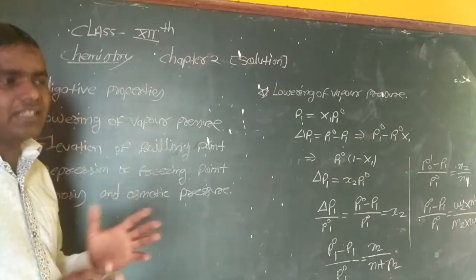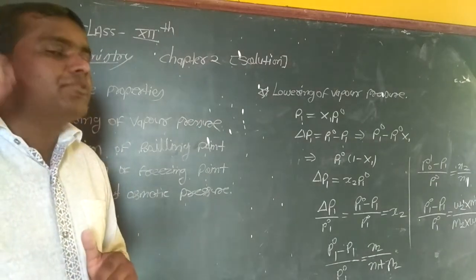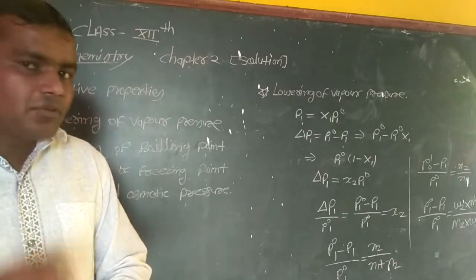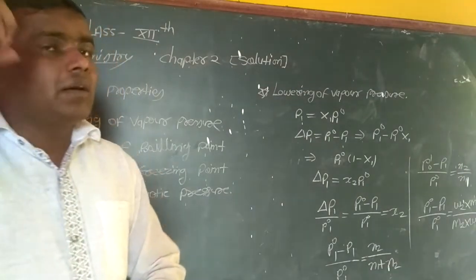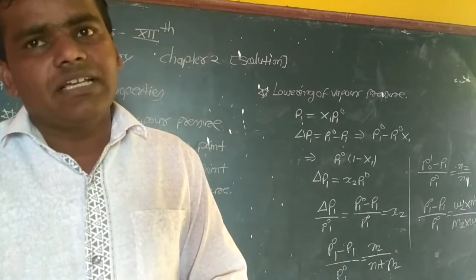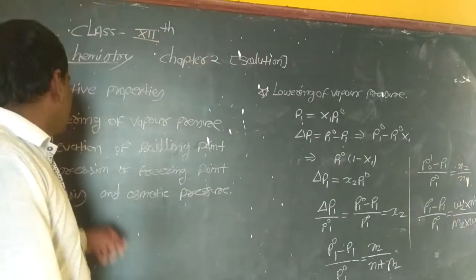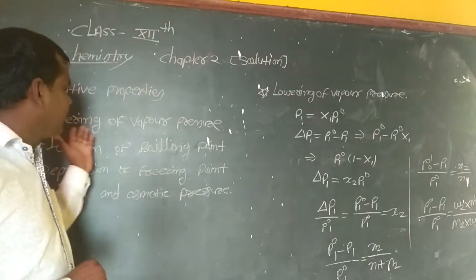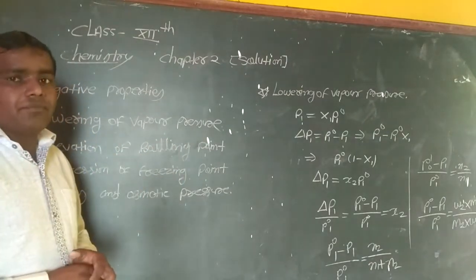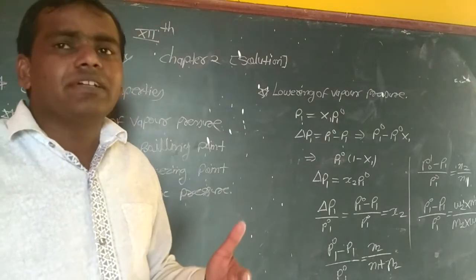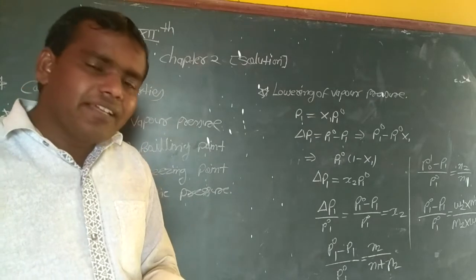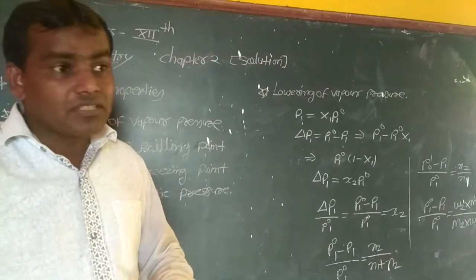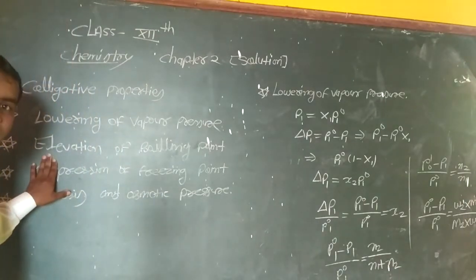When the vapor pressure decreases, the boiling point increases. For pure water, it boils at 100 degrees. When we add a solute to water, we have to increase the temperature. Then we create elevation of boiling point.